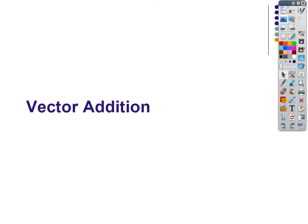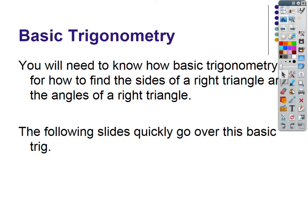Vectors is essentially basic trigonometry. You need to be able to find the sides of a right triangle, and then you'll also have to be able to find the angles of a right triangle — obviously the two angles other than 90. It is very much just a right triangle, Pythagorean theorem, SOH-CAH-TOA method here.